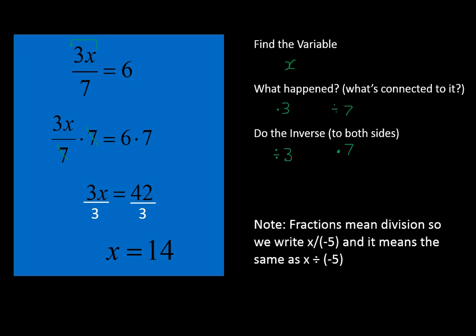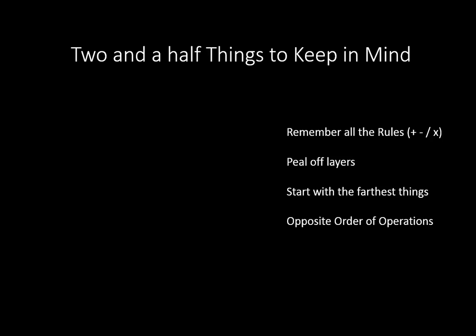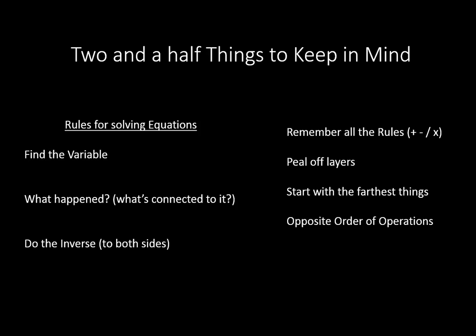That's how we solve two-step equations when we are involving fractions. Two and a half things to keep in mind: Remember all the rules for addition, subtraction, multiplication, and division. Remember to peel off layers, starting with the things farthest away or least connected to our variable and moving in. Another way of thinking about it is the opposite of the order of operations when you are undoing an equation. And we have to remember, as always, our rules for solving equations—find our variable, ask what happened, and then do the inverse to both sides of the equation. Hope that lesson was helpful for you. Have a wonderful day.